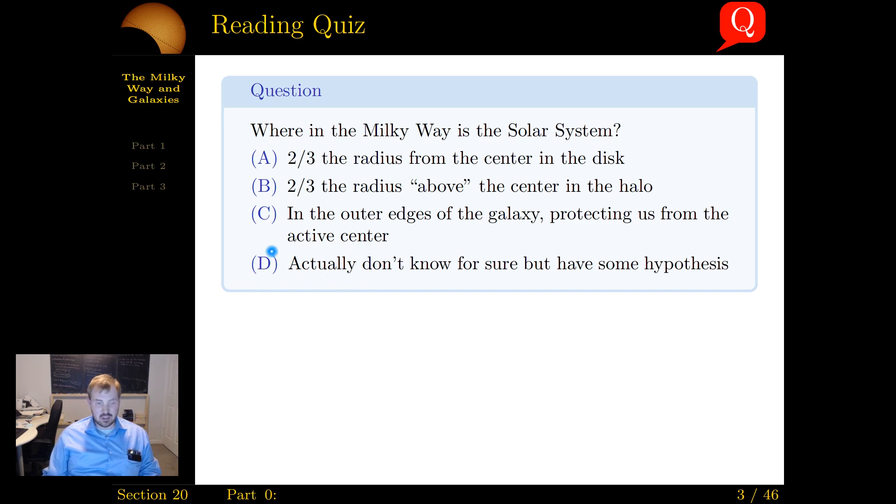Obviously, some of you might be tempted to think it's this one, that we only have ideas. And I would argue that we have verifiable evidence. It's not just hypotheses. We are fairly certain of where the solar system is in the Milky Way. And by doing all this composition of different techniques, we've established that we're about here. We're about two-thirds of the radius from the center of the disk.